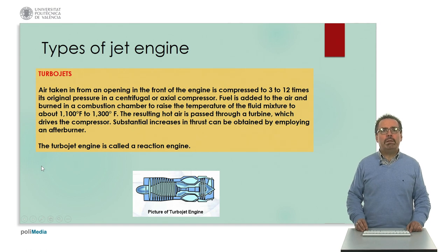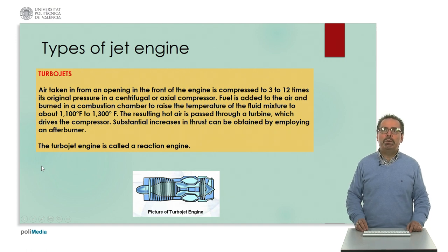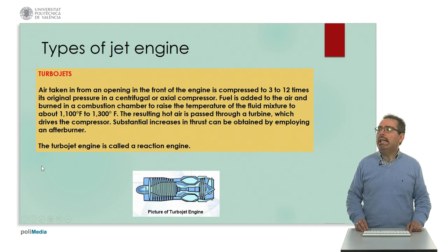We will start with the first type, called turbojets. The air taken in from an opening in the front of the main engine is then compressed to between 3 and 12 times its original pressure. Pressure is then increased in a centrifugal or axial compressor.